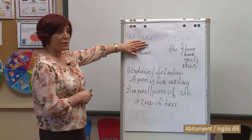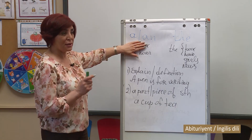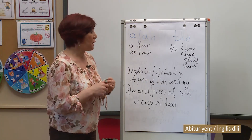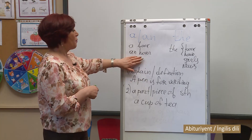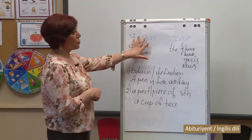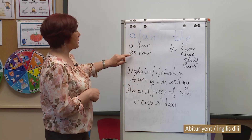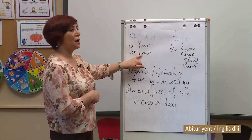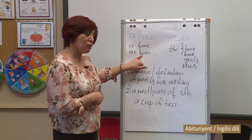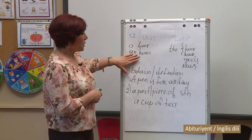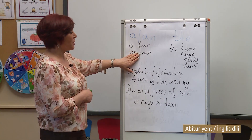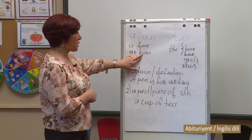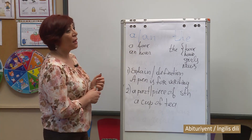We use indefinite articles with non-specific and non-particular nouns, but these nouns must be singular and countable. For example, 'a book.' Pay attention to the two forms of indefinite articles: 'a' and 'an.' We use 'a' if the noun starts with a consonant, but 'an' is used with nouns that start with a vowel. For example, the word 'hour' starts with 'h,' but the 'h' is not pronounced and its pronunciation starts with a vowel — so we say 'an hour.'